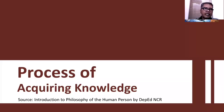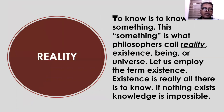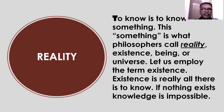Let's study the process of acquiring knowledge in order to understand better what knowledge is. The first process is reality. They said that to know is to know something, and what is this something? This something is what philosophers call reality, existence, being, or universe — they are the same. All those things and objects in this world, in this universe, that are existing — they are reality.